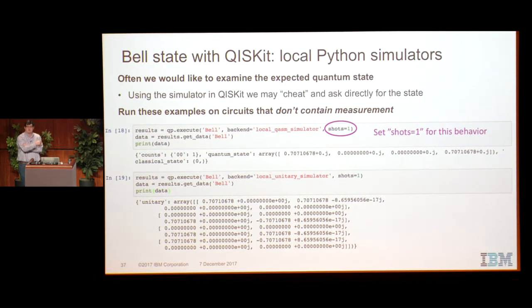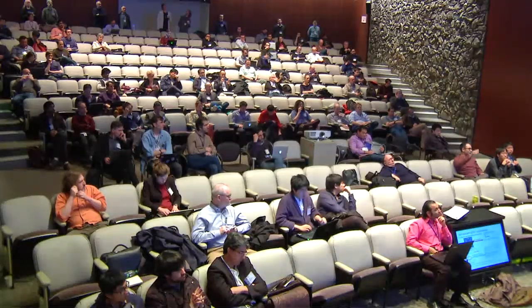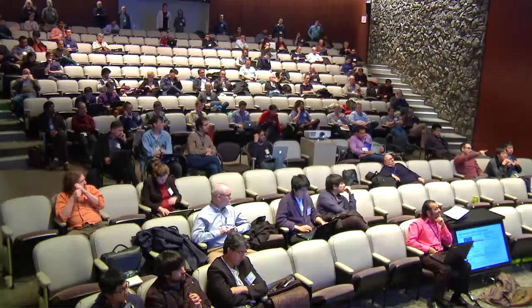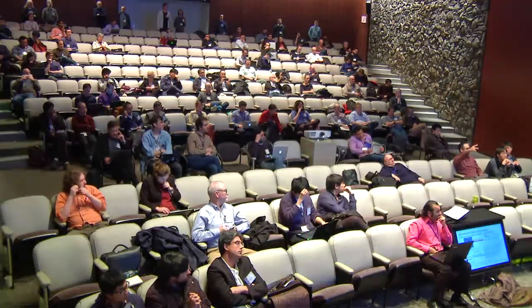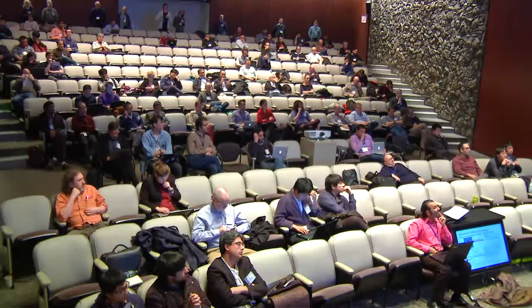Question: how much rewriting does the transpiler do in general — is it more complicated than just flipping a direction? Answer: Yes, it's usually more complicated. Right now what's implemented is not close to optimal but works for any layout graph.